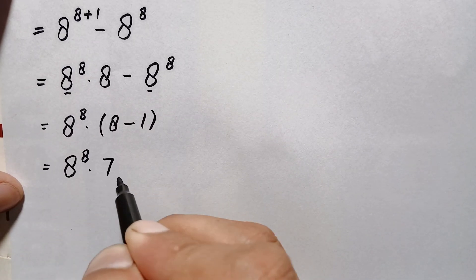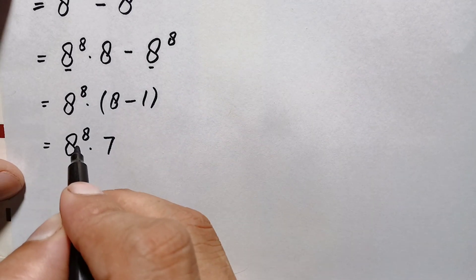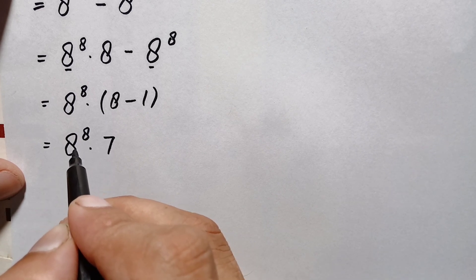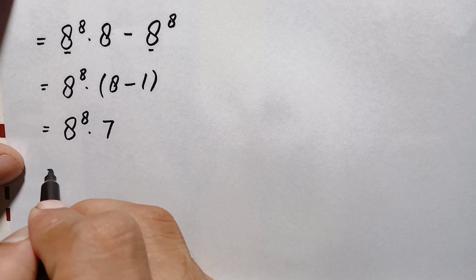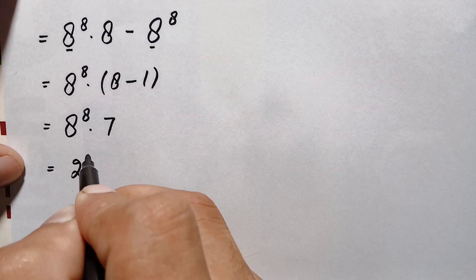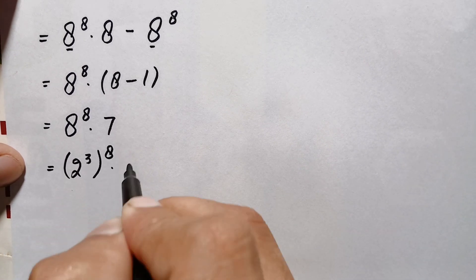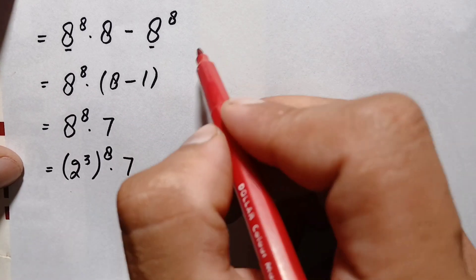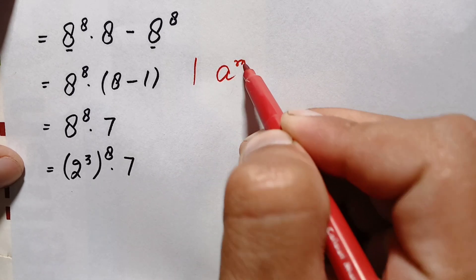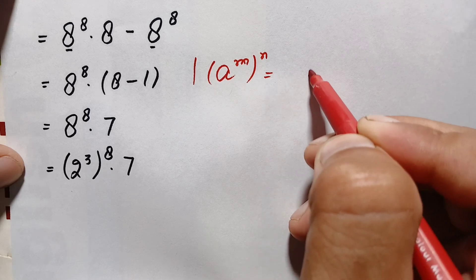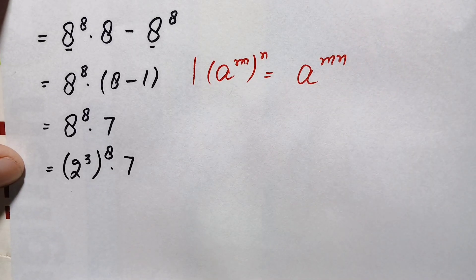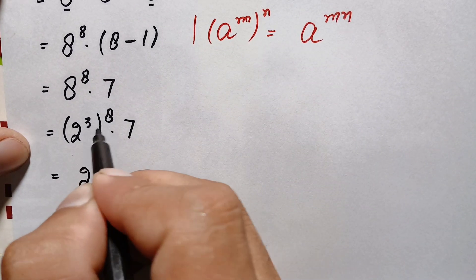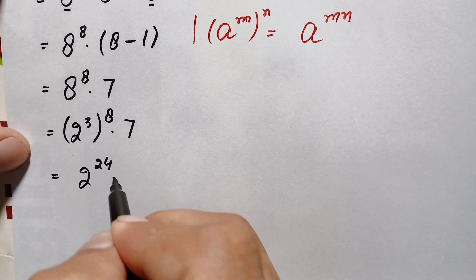So the expression becomes 8 raised to power 8 times 7. To find the value of 8 raised to power 8, we write 8 as 2 cubed, so it becomes (2³) raised to power 8, times 7. We apply the identity (a raised to power m) raised to power n equals a raised to power m times n, so the powers multiply: 3 times 8 is 24, giving us 2 raised to power 24 times 7.